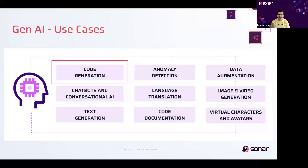Generative AI can produce various types of data, such as text, audio, images, videos, and synthetic data. This has opened up the possibility of a new generation of use cases and applications. Some of the key applications of generative AI and large language models are shown on the slide. Today, I'll focus on the code generation use case, which is about the ability of large language models to assist in code generation.